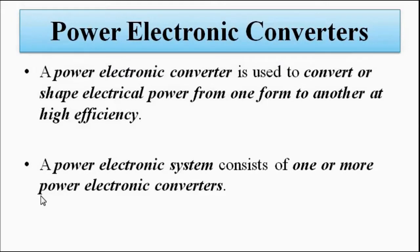The power electronic converter basically converts or shapes electrical power from one form to another. The frequency, amplitude, and direction of the voltage or current are modified. It all depends on what is the requirement of the load - what type of electrical or electronic equipment is being used. Depending on that, the frequency, direction (whether AC or DC), the magnitude of the voltage or current, and whether it should be fixed or variable are all taken care of. The power electronics system consists of one or more power electronic converters.